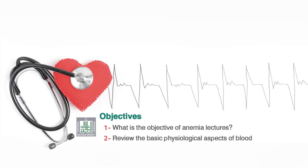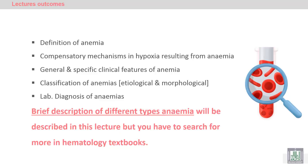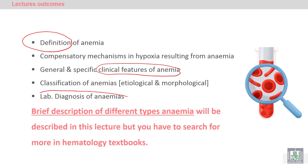We'll discuss hematological disorders for medical students, focusing on anemia in the following lectures. We'll start today by discussing iron deficiency anemia. Before that, we need to know the definition of anemia precisely, how to clinically diagnose anemia, and how to confirm the diagnosis by laboratory methods. Clinical diagnosis is suspicious for anemia, while laboratory diagnosis is confirmatory for the anemia and its type.